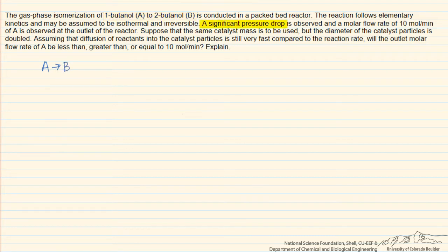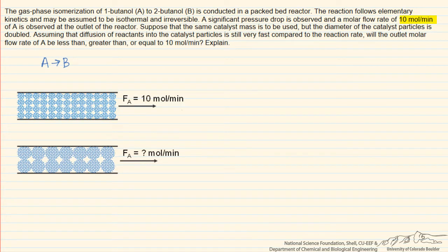We know that there is a significant pressure drop in this reactor that is going to affect the kinetics. We are told that there is a molar flow rate of 1-butanol observed at the outlet of the reactor of 10 moles per minute under a certain mode of operation.